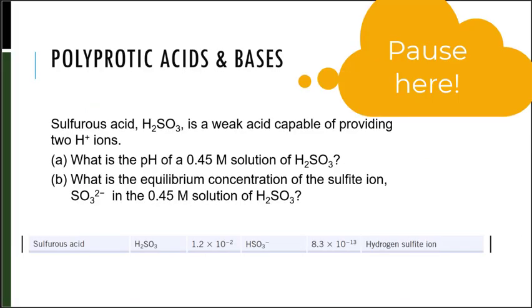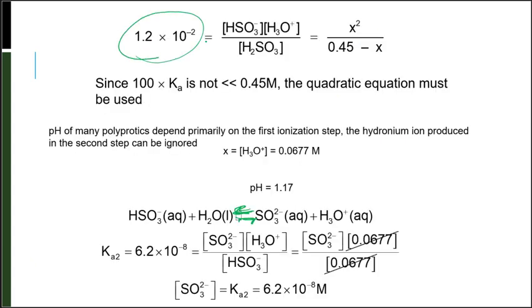Why don't you pause the video here and try to solve this problem. Let's solve this. We set our Ka equal to our products over reactants after you set up your ice table. So we would have X squared over 0.45 minus X. And because if I did 100 times this Ka, it is not less than the initial concentration of 0.45. So we do have to use the quadratic equation. So when we get our X, our X value after we plugged in the A value, the B, the C into the quadratic equation, we would get X was equal to 0.0677 molar. So if I take the negative log of that, the pH would be 1.17.